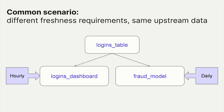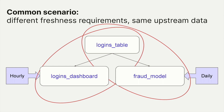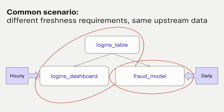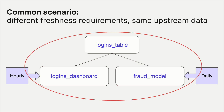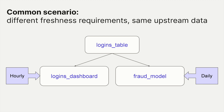Freshness-based scheduling really shines when the same asset is upstream of assets with different freshness policies. Here we have a logins table upstream of both a logins dashboard and a fraud model. The dashboard needs to be updated hourly, but the fraud model only needs to be updated daily. Trying to schedule this with workflows gets very awkward — overlapping workflows run redundantly, DAG triggers get complicated, or you end up with skip logic inside one MegaDAG. I've tried all these approaches and found each difficult in its own way. But with freshness-based scheduling, you can literally express this diagram in code, and the scheduling system handles updating assets on time without redundant computations.